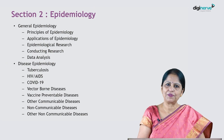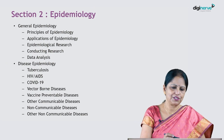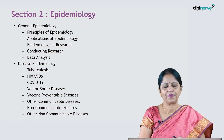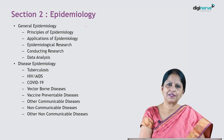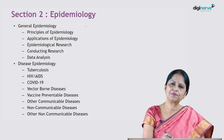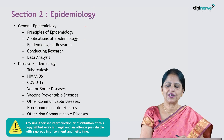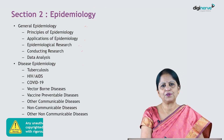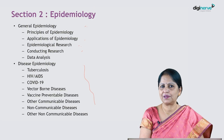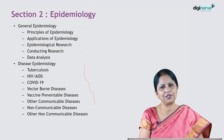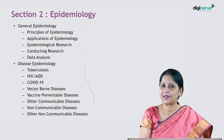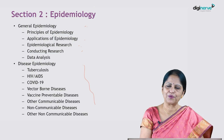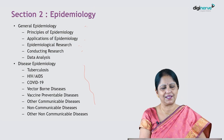Section 2 is on epidemiology, with two parts: general epidemiology and disease epidemiology. The general epidemiology part describes principles and applications of epidemiology and epidemiological research. Disease epidemiology covers communicable and non-communicable diseases that are public health problems, along with the relevant national health programs described in detail.